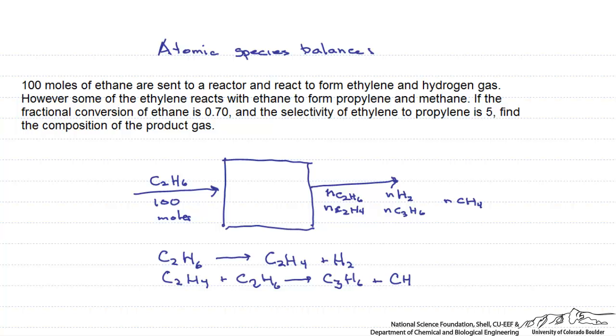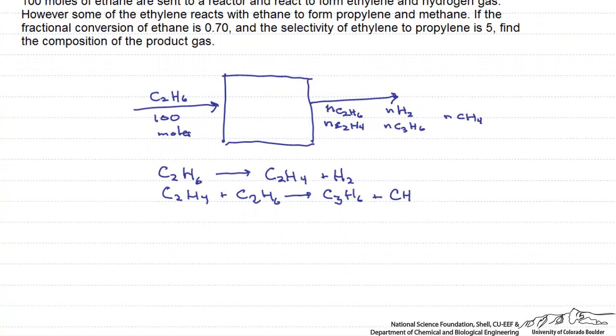So let's do a degree of freedom analysis on this and make sure that this can actually be solved. So how many unknowns do we have? Well, we have the five unknowns that are coming out in the product gas. And we have two atomic species, the carbon and the hydrogen.